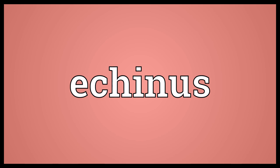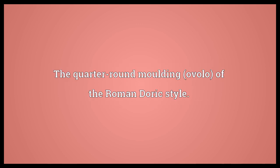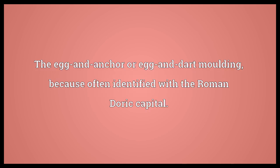Echinus. The rounded moulding forming the bell of the capital of the Grecian Doric style, which is of a peculiar elastic curve. The quarter round moulding ovolo of the Roman Doric style. The egg and anchor or egg and dart moulding, often identified with the Roman Doric capital. E-C-H-I-N-U-S.